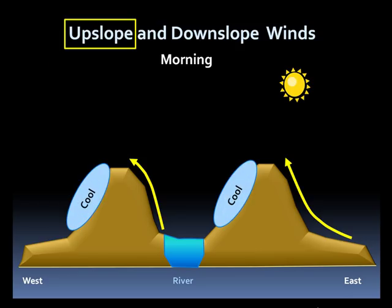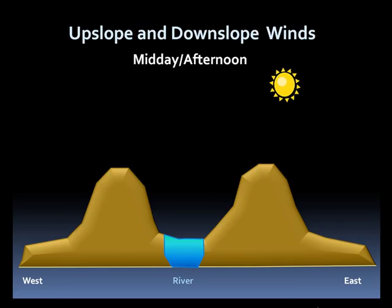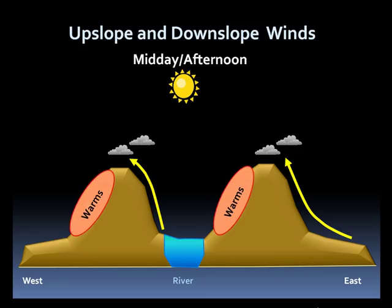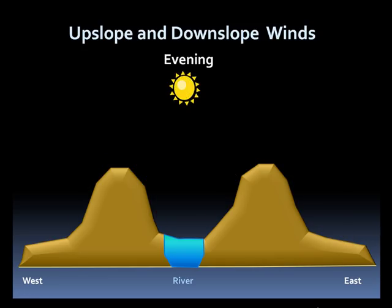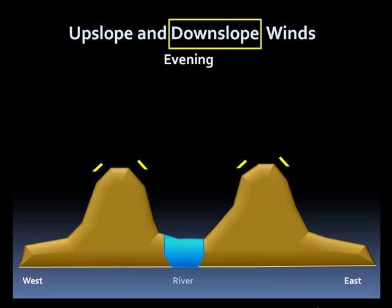On the western side, the slope remains cool and the air will want to sink. In the afternoon, the air will continue to move up the eastern slopes and can lead to some cloud formation. Meanwhile, the western slopes have started to warm, and the air will start to rise up on these sides. By the evening, both slopes are cooling, and the air will want to sink or flow down both slopes. This is called a downslope wind.